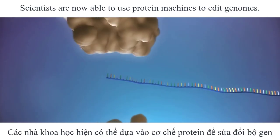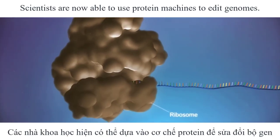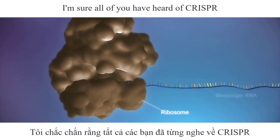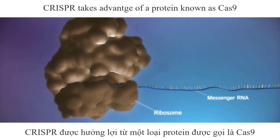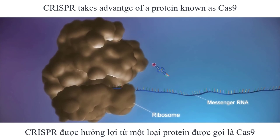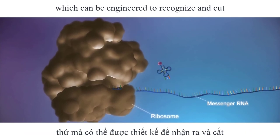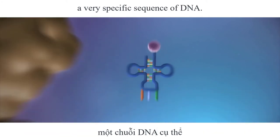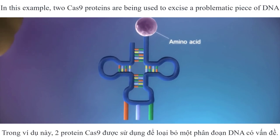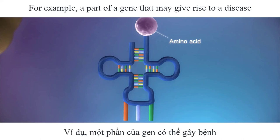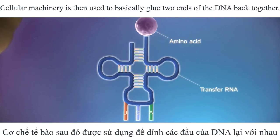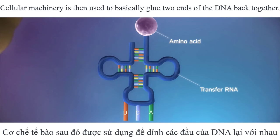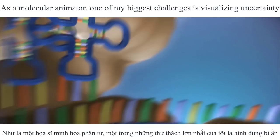Scientists are now able to use protein machines to edit genomes. I'm sure all of you have heard of CRISPR. CRISPR takes advantage of a protein known as Cas9, which can be engineered to recognize and cut a very specific sequence of DNA. In this example, two Cas9 proteins are being used to excise a problematic piece of DNA — for example, a part of a gene that may give rise to a disease. Cellular machinery is then used to basically glue the two ends of the DNA back together.